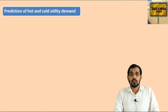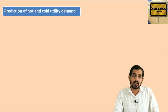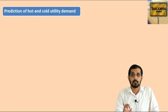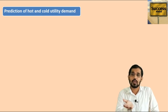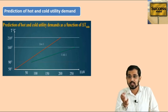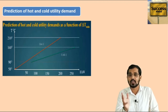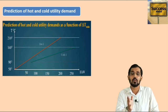Now, prediction of hot and cold utility demand. To predict this, you should have knowledge of the TH diagram. The TH diagram is nothing but a diagram in which on the y-axis we are showing temperature values and on the x-axis we are showing enthalpy values. This is the TH diagram, and the data from the previous slide shows temperature values of 210, 160, 90, and 50, with corresponding enthalpy values of 50, 100, 150, 200, and 250.